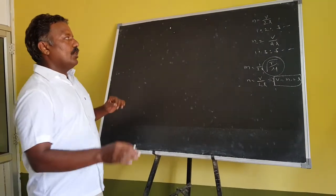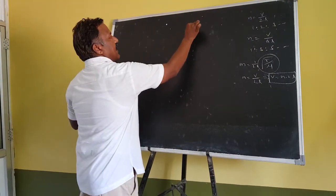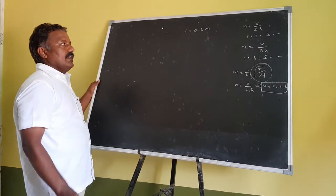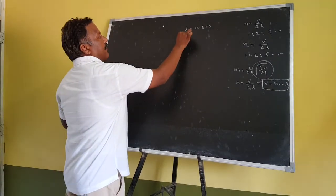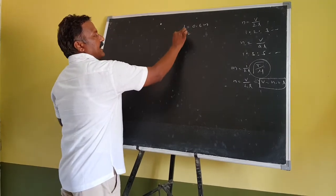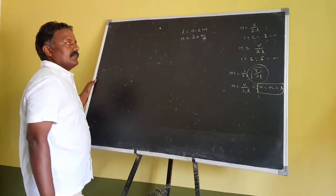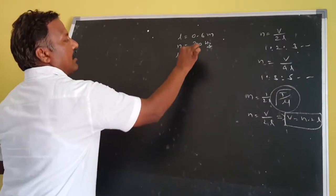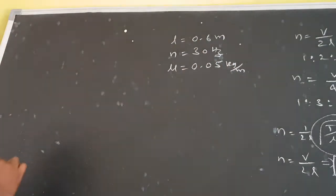What are the given values? Length L is equal to 0.6 m. Frequency N is equal to 30 Hz. And linear density mu is equal to 0.05 kg per meter.